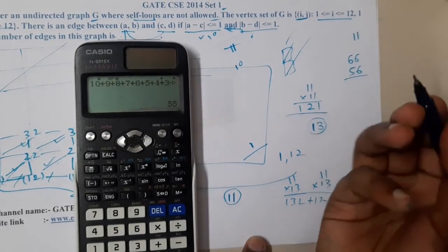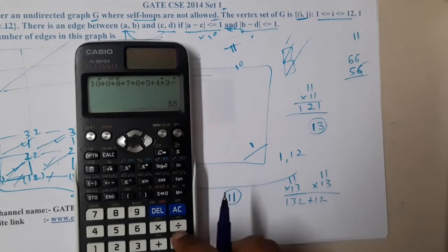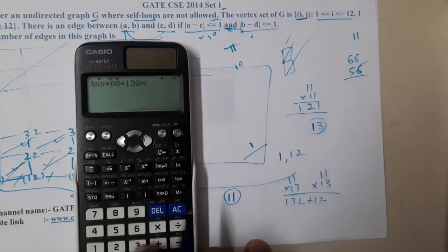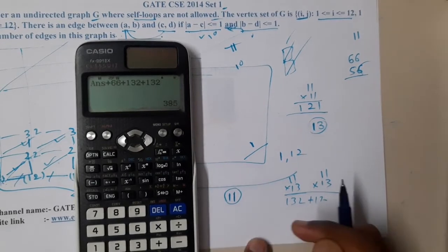Now we're done with all the squares, then we counted these diagonals also. Nothing is left out. So it's 55 + 66 + 132 + 132.